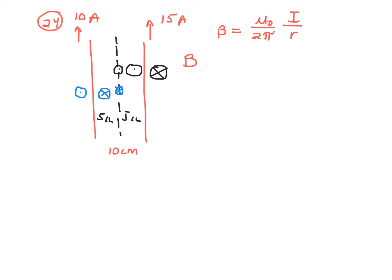If I calculate B sub 10, the magnetic field for the 10-amp wire: it's 2 times 10 to the negative 7th — that's mu zero over 2 pi — times the current in that wire, 10 amps, divided by how far I am from that wire, which is 0.05 meters. B sub 10 at that location comes out to be 4 times 10 to the negative 5th teslas toward the floor, as indicated by the blue X in the diagram.